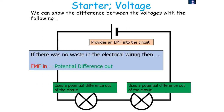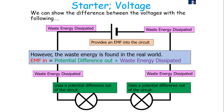If there was no resistance in the electrical wiring, we could say that the EMF in would equal the PD out. But there is waste energy dissipated as the mobile charge carriers travel through the wires, so it's more correct to say EMF in equals the potential difference out plus the waste energy dissipated to the surroundings — what we sometimes call the lost volts of the circuit.